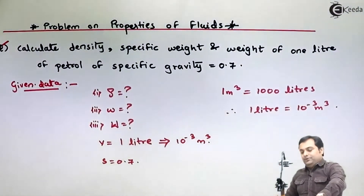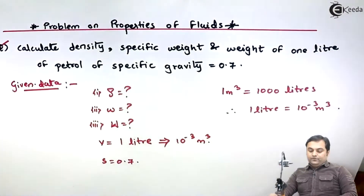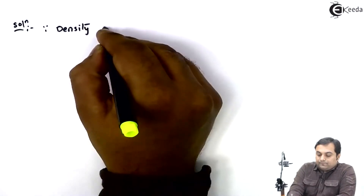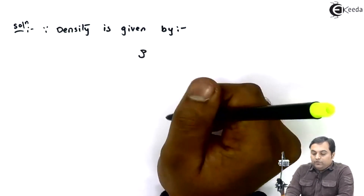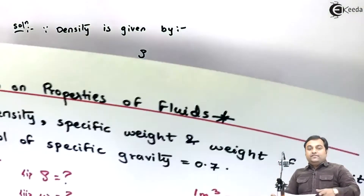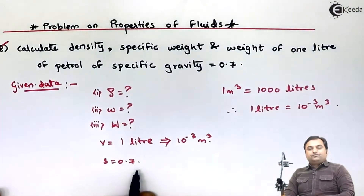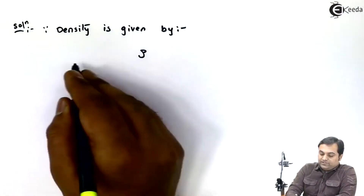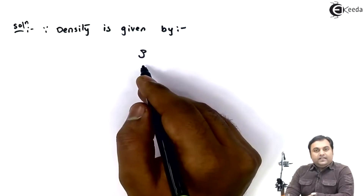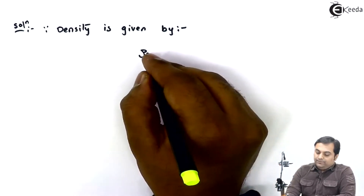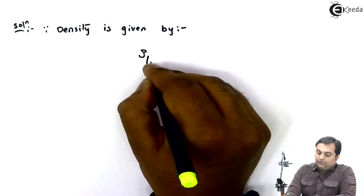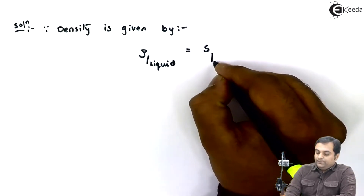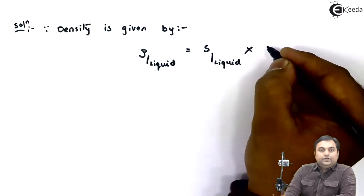Now let us get the solution. The first part is density. Since specific gravity is given, I'll use the formula of specific gravity to calculate density. The density of liquid is equal to specific gravity of liquid multiplied by the density of the standard liquid, which is water.